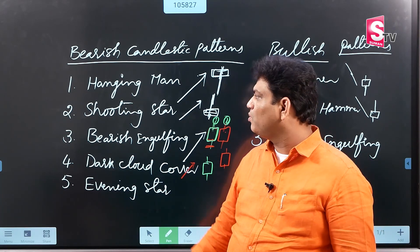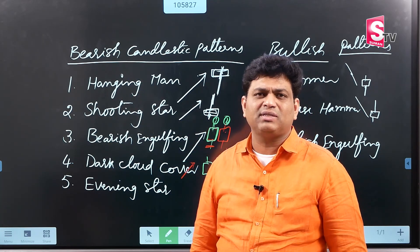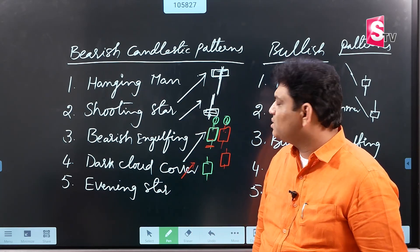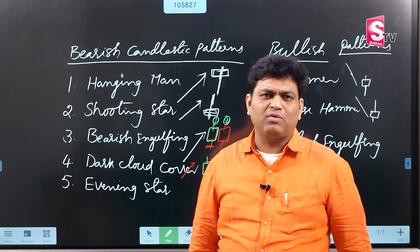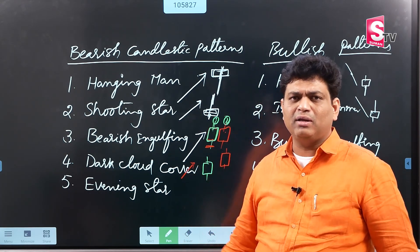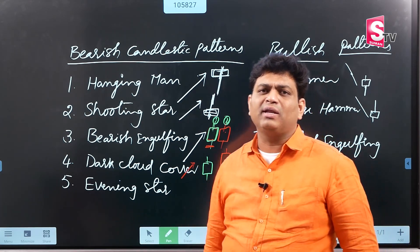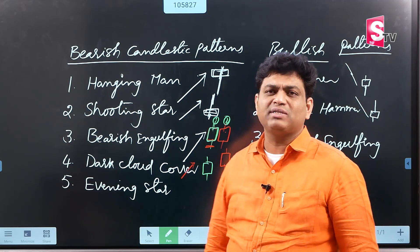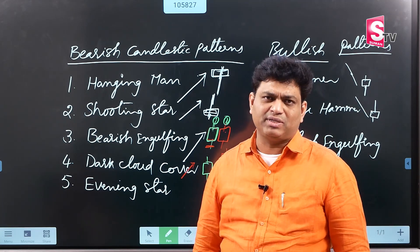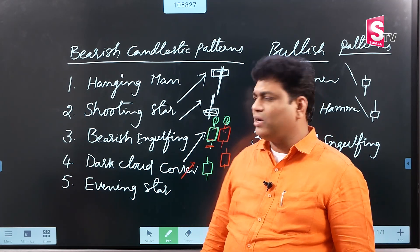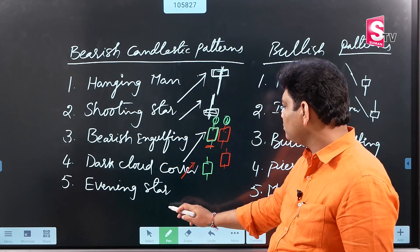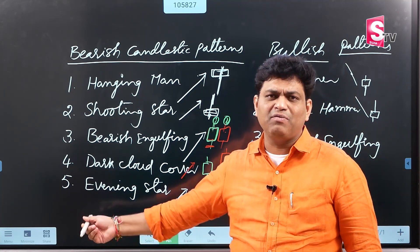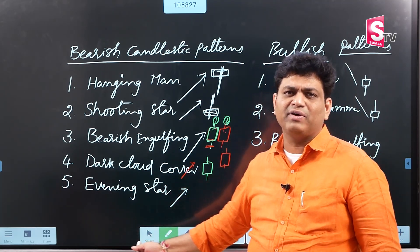We have already discussed 4 bearish patterns: hanging man, shooting star, bearish engulfing, and dark cloud cover. The 5th candlestick pattern is called the evening star, which we identify in the uptrend.